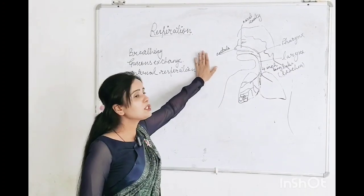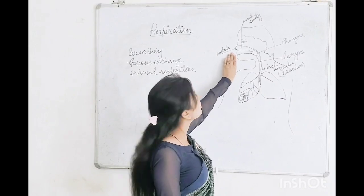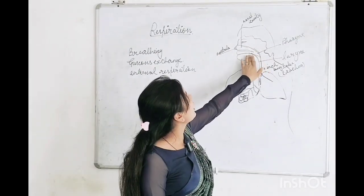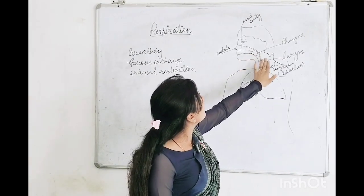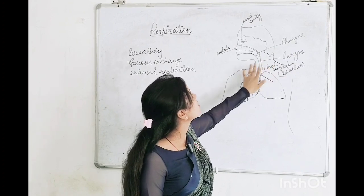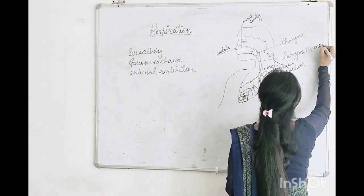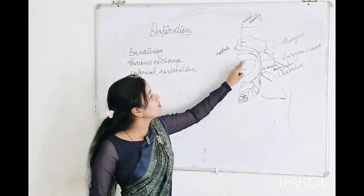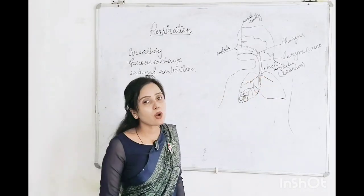So, to summarize the air pathway: from the surrounding environment, it passes into the nostrils, from nostrils to nasal cavity, then to pharynx — the common passage for food and air — then to larynx, the voice box, and then into the four-inch-long trachea.